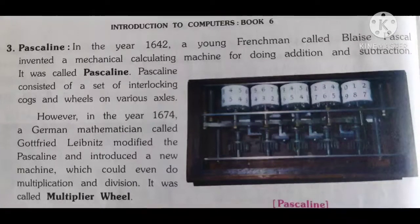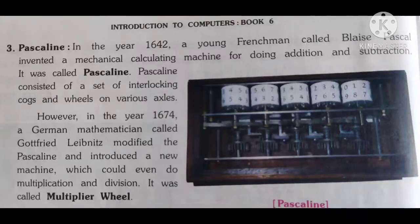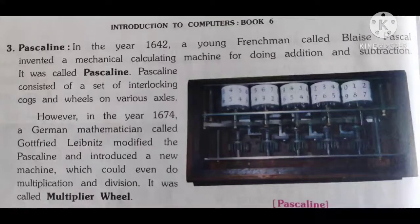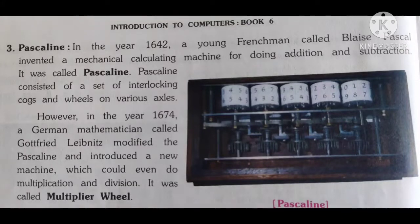The next point is Pascaline. In the year 1642, a young Frenchman called Blaise Pascal invented a mechanical calculating machine for doing addition and subtraction. It was called Pascaline. The Pascaline consisted of a set of interlocking cogs and wheels on various axes.